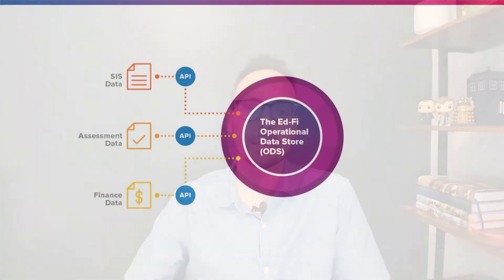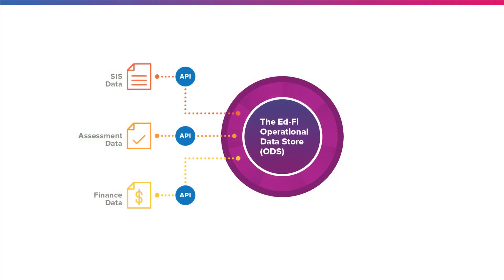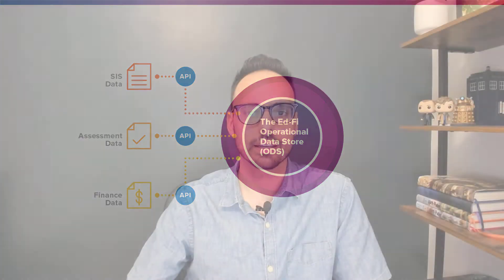The ODS is highly normalized, storing data in such a way that reduces duplication. This is really great because an ODS is your transactional store, meant to support a high number of insertions, updates, and deletions. The EdFi API is the mechanism by which data in the ODS is updated. The big takeaway here is that the ODS stores data the way that it does for a reason — it's to serve the purpose of what an ODS is meant to do.